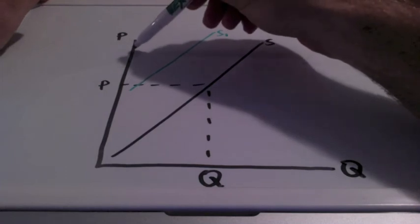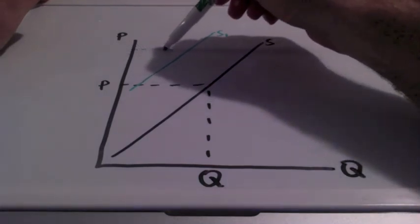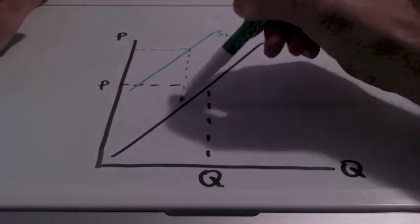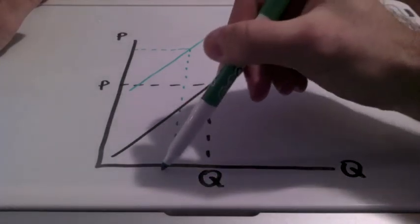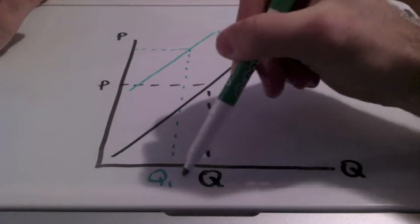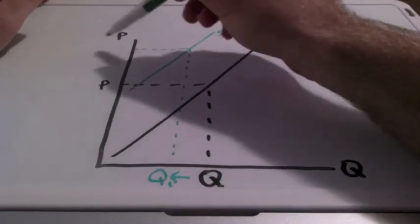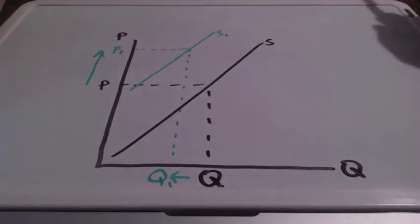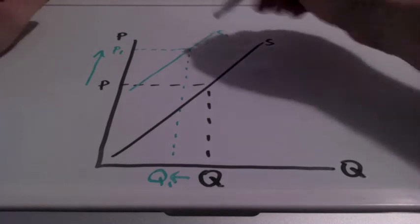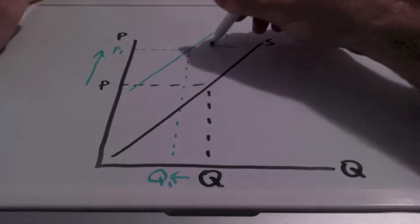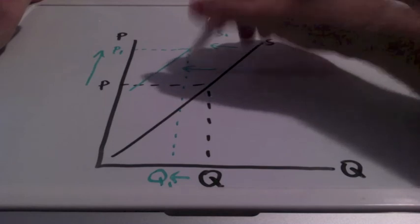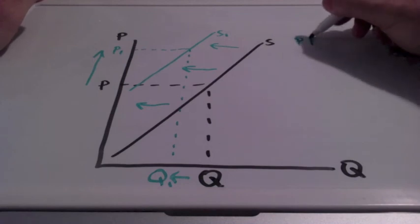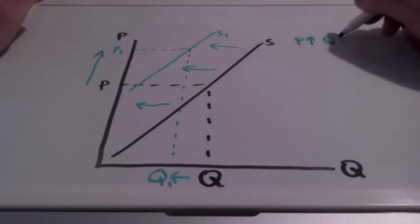We know that our prices are going to increase, and the quantity supplied of workers and just overall quantity supplied of goods will also decrease. So we call this a decrease in supply. This is a leftward shift. Prices increase, quantity will decrease.